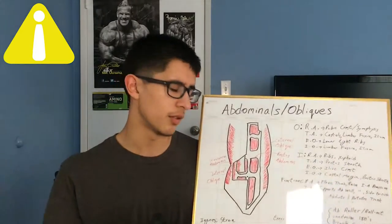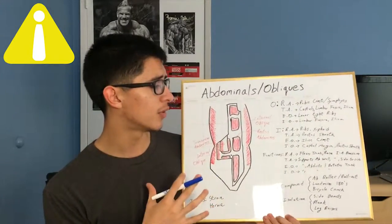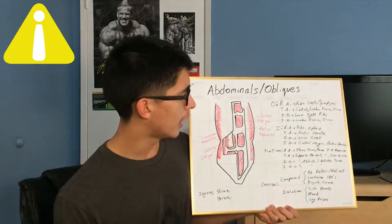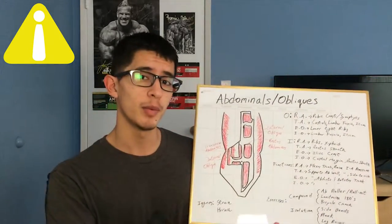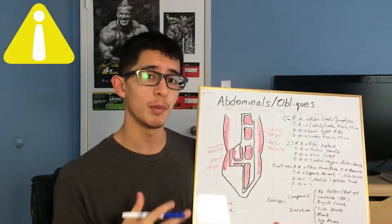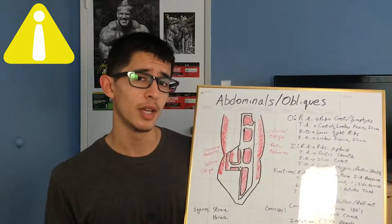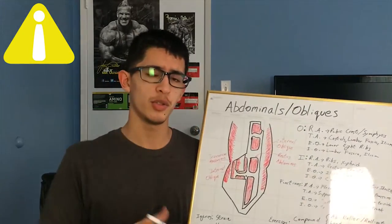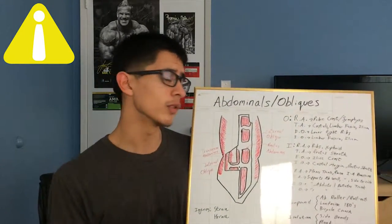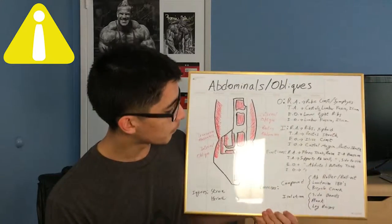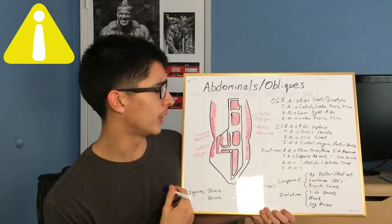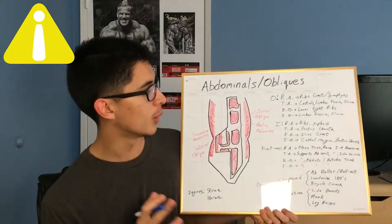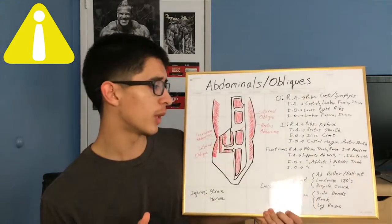If you aren't keeping your spine neutral in compound or heavy exercises, you're asking for an injury. Intra-abdominal pressure is very important — all the muscles in the abs help create it. That's also a reason why people wear weightlifting belts: to help build abdominal pressure if they can't do it on their own. The belt gives your stomach something to press against to keep your back straight.